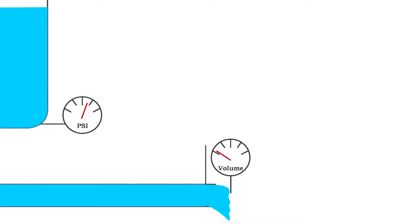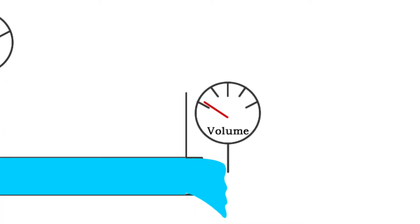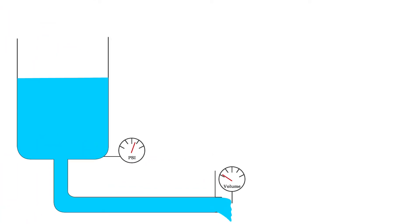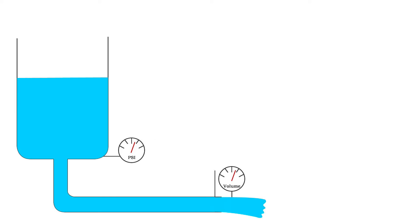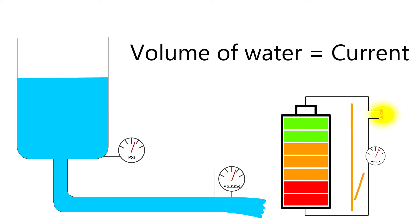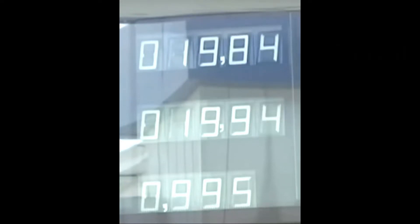Let's now look at the water flowing out of the pipe at the bottom of the tank as a result of that pressure. The amount of water coming out of the pipe is the equivalent of electrical current. Current is simply a measure of how much electricity is flowing through a wire or a circuit, just like a flow meter might measure how much liquid is flowing through a pipe.